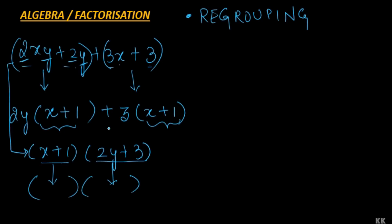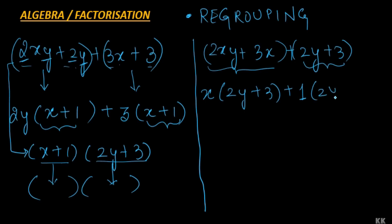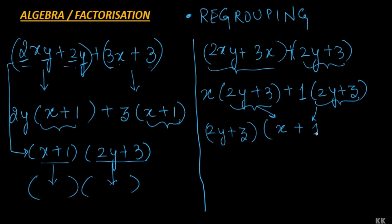The question arises: do we always have to follow a specific sequence of grouping the terms? The answer is no — we can regroup in any order. Let us regroup the first and third terms together and the second and fourth terms together. In the first bracket, x is common, leaving 2y plus 3. In the second bracket, 1 can be taken as common, also leaving 2y plus 3. Again, 2y plus 3 is common, and taking it out we are left with x plus 1. So irrespective of the grouping order, we reach the same factor form.